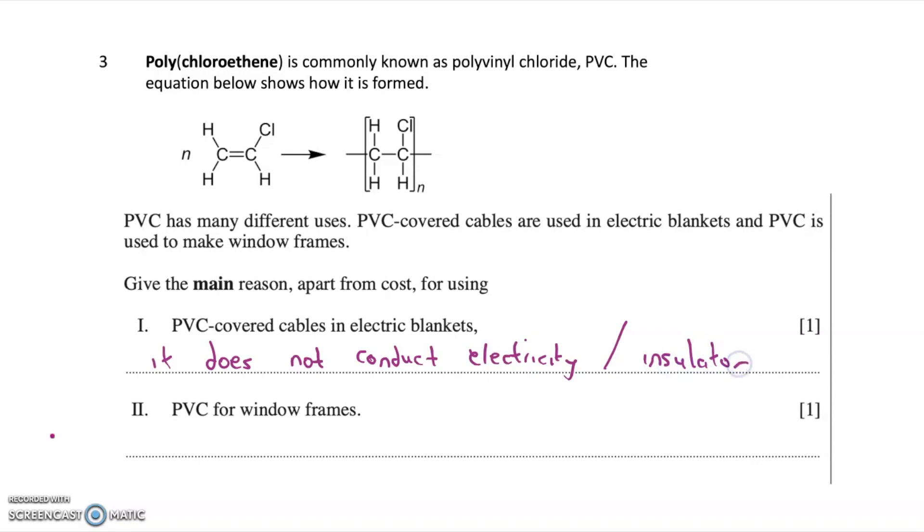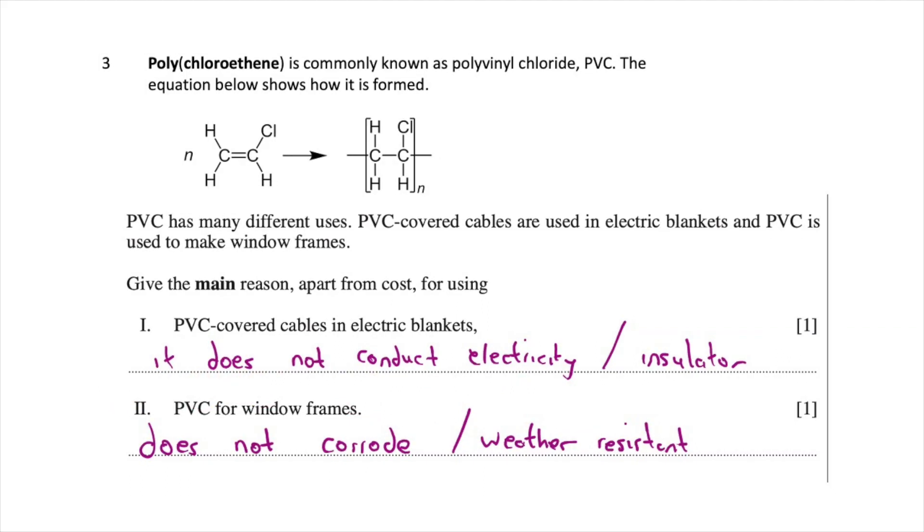And then it asks you to give the main reason, apart from cost, for using PVC for window frames. Well, the main reason we use PVC for window frames is that it doesn't corrode, it's weather resistant. So PVC is waterproof, it doesn't corrode, it's weather resistant. So that's the main reason why we would use PVC for window frames. Now both these parts get you one mark, and it's important when answering questions on polymers that you can relate the properties, the characteristics, to the uses that that polymer has.